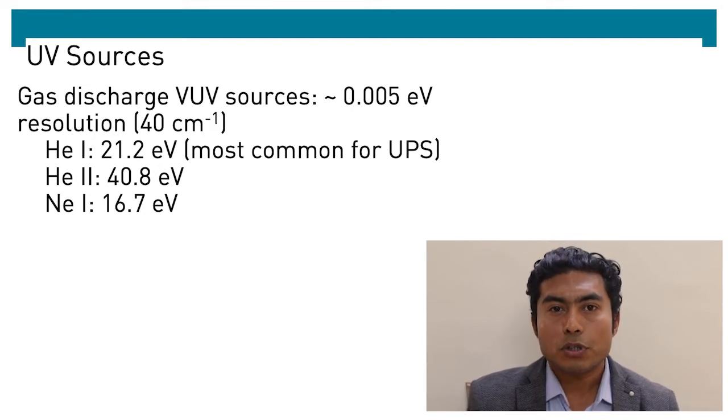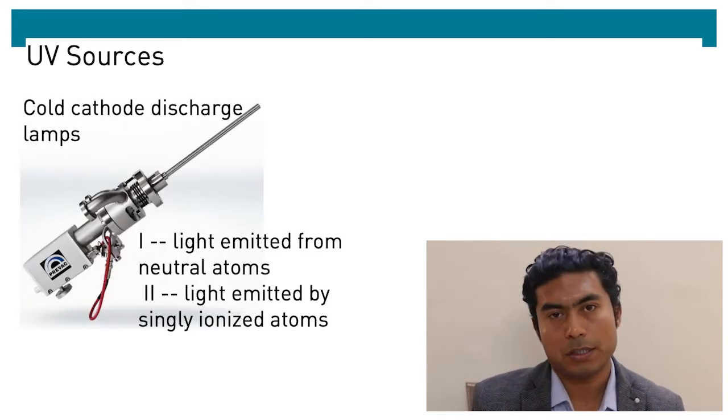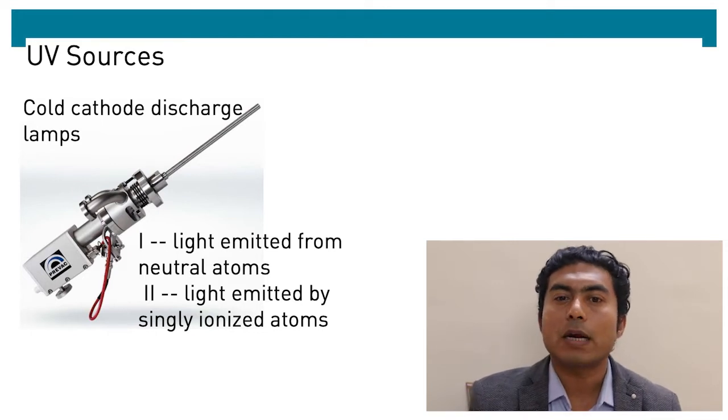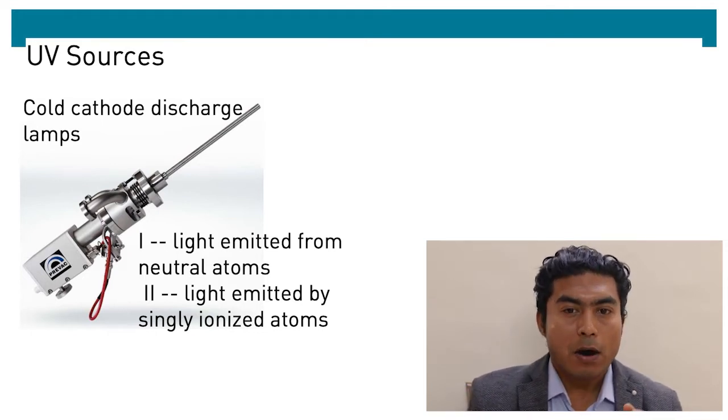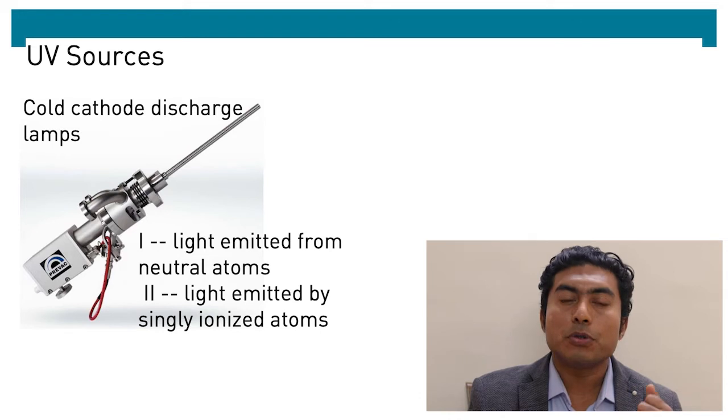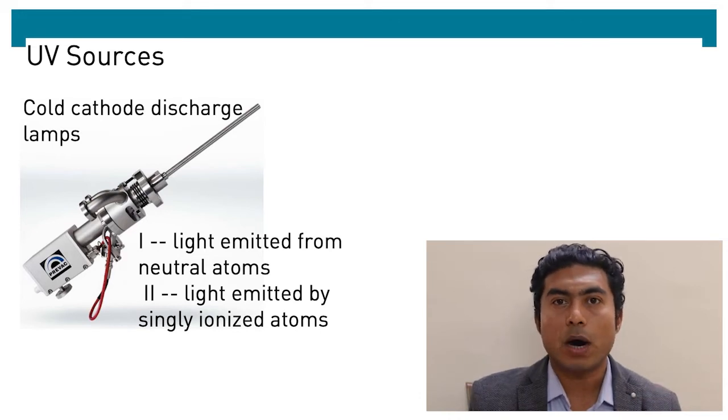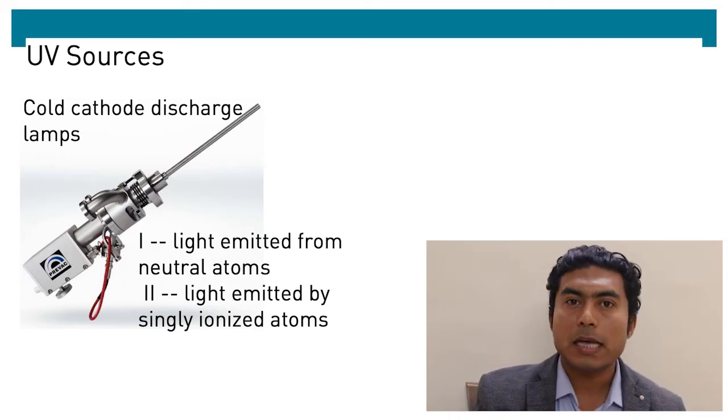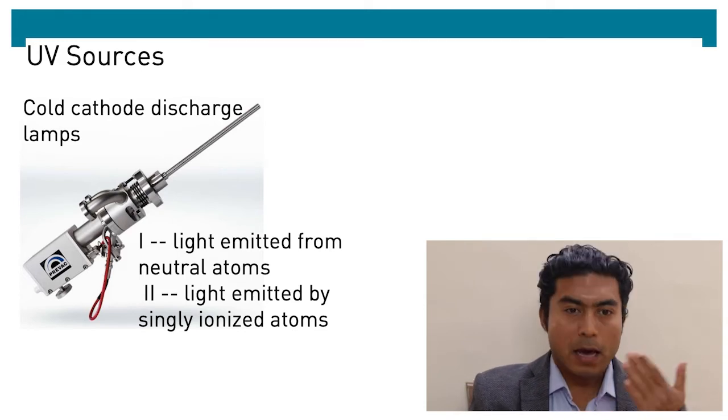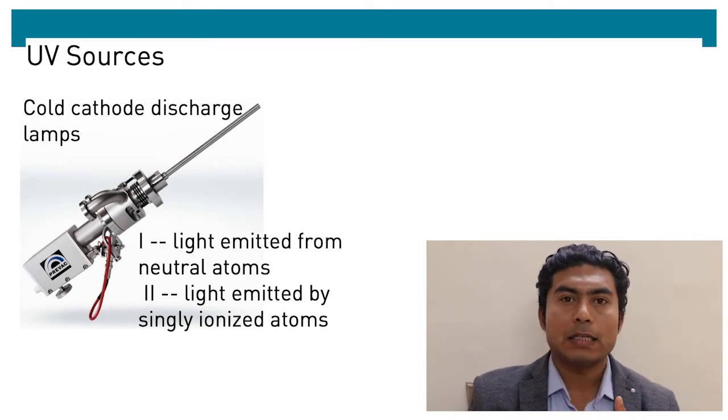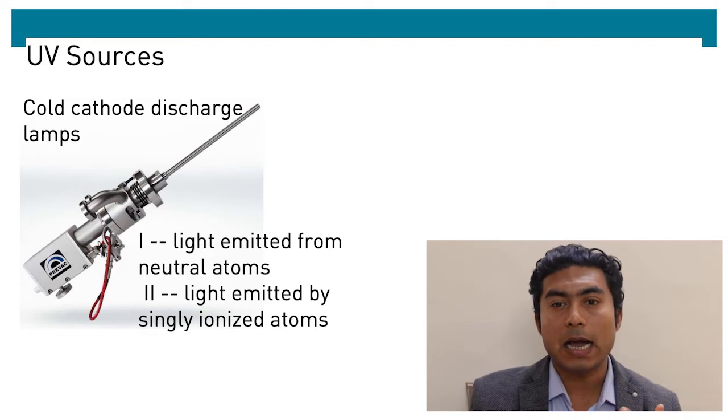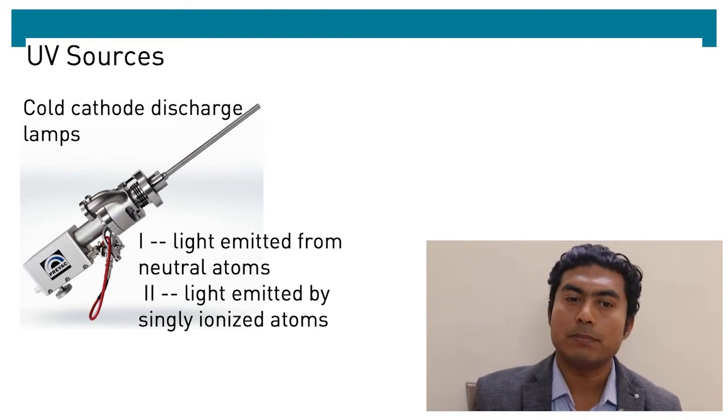The most common one is helium cold cathode discharge lamps. They produce two prominent lines. One is from the neutralized atoms, called helium-1 emission, and the light emitted by singly ionized atoms are called helium-2 lines.